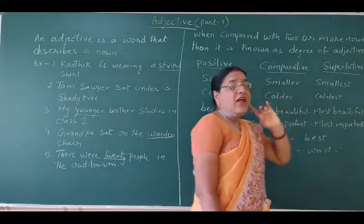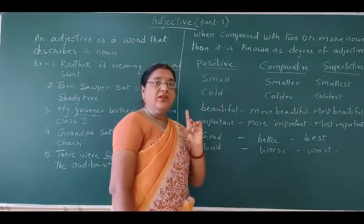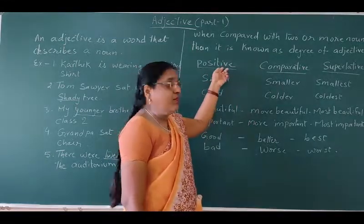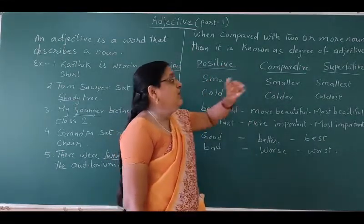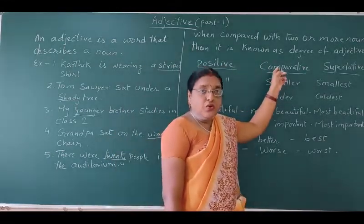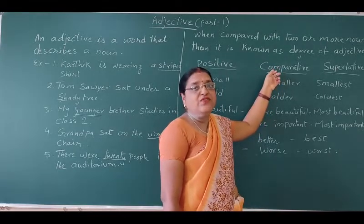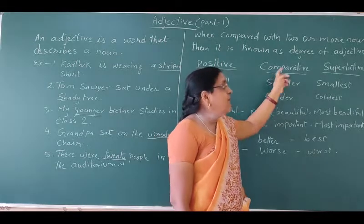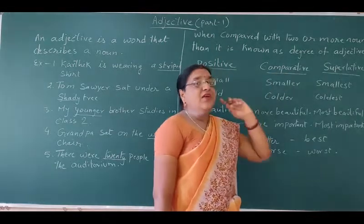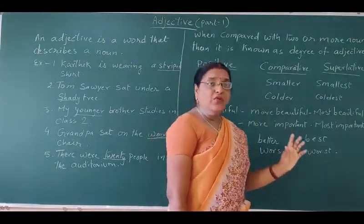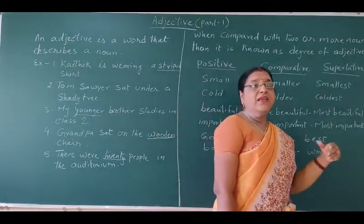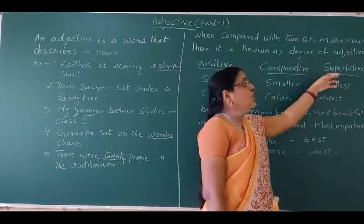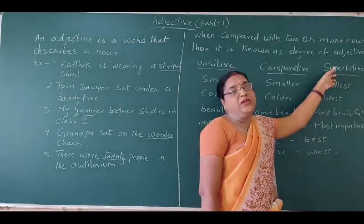Have you understood? Whenever you are talking about only one noun, you are talking about positive degree. Whenever you are talking about two nouns and the description of two nouns, then you are talking about comparative degree. And when you are talking about more than two nouns and comparing among them, you are talking about supernative degree.